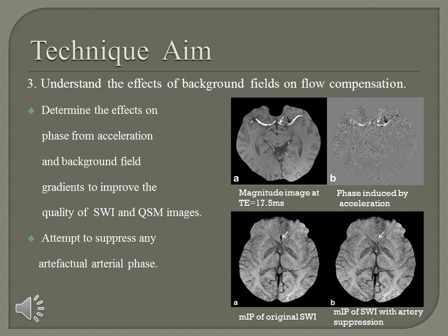Another aim of our paper is to understand the effects of background fields on flow compensation. SWI uses phase images to enhance the contrast of iron-laden tissues and veins. However, if the arteries generate artifactual phase, this may produce false enhancement in the SWI data — this is why 3D full flow compensation is typically required. However, when there are background fields, there may be artificial fields in the arteries even with first-order flow compensation gradients.